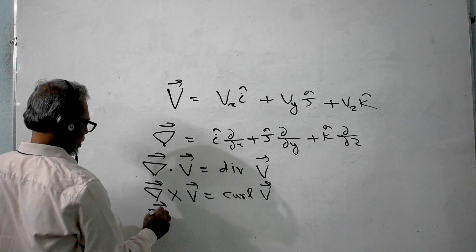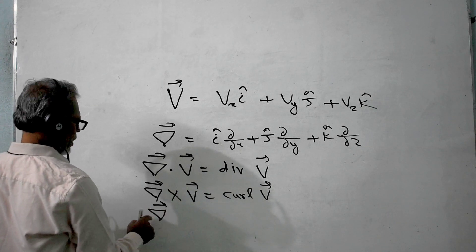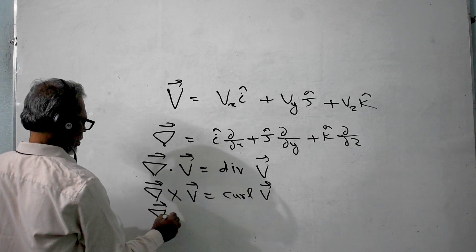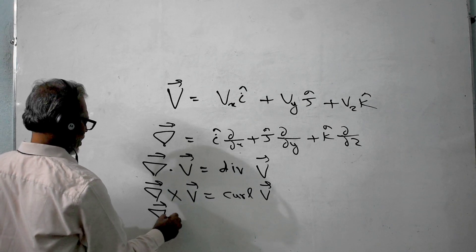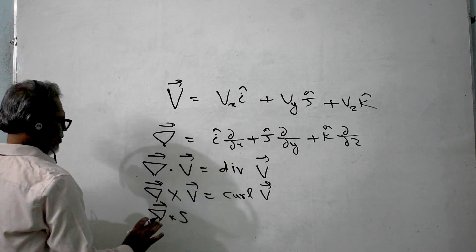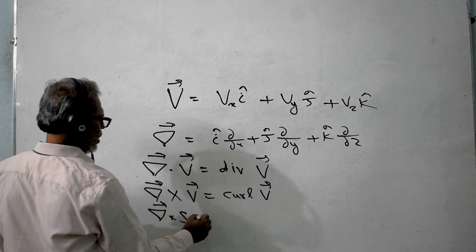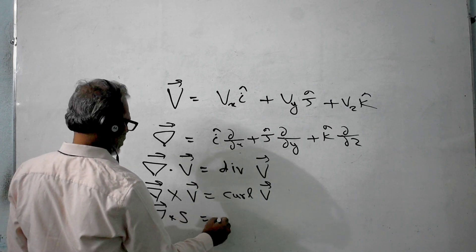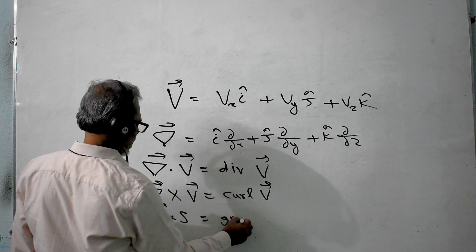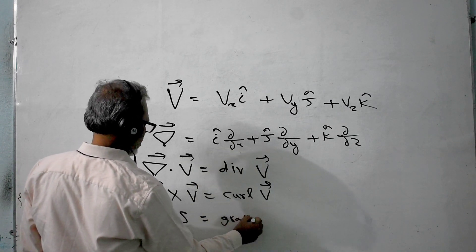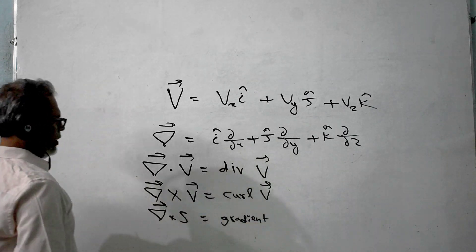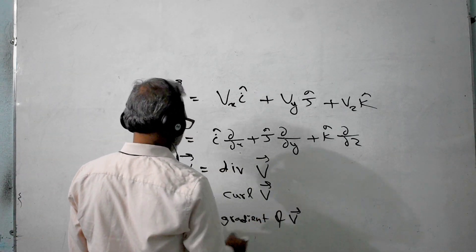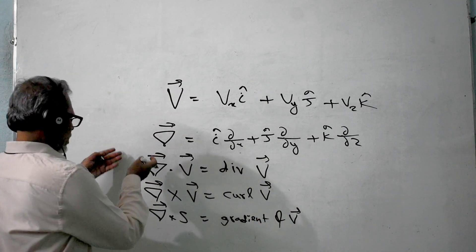The third operation is del dot any scalar S, and this is called gradient. Gradient is written as del into S, where S is a scalar. So gradient of V — all three terms: divergence, curl, and gradient — carry physical significance.